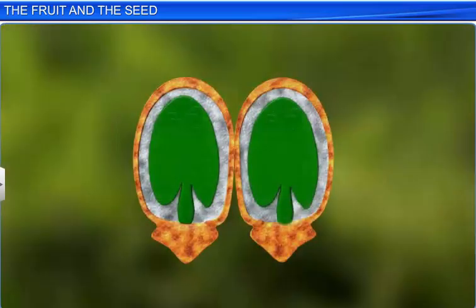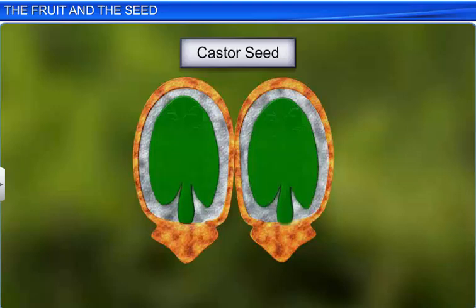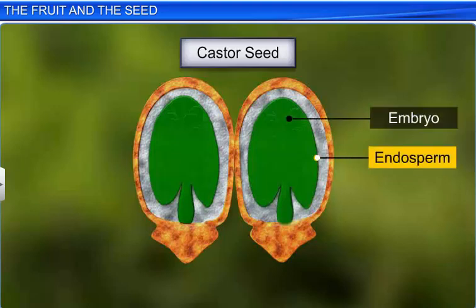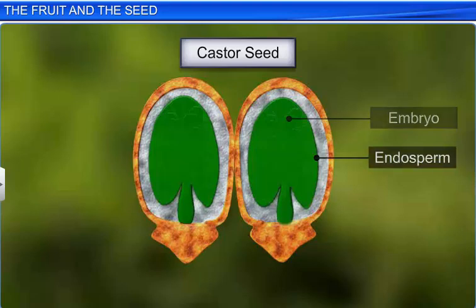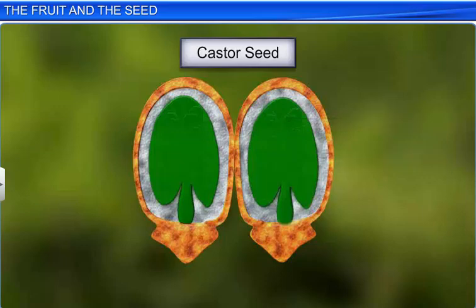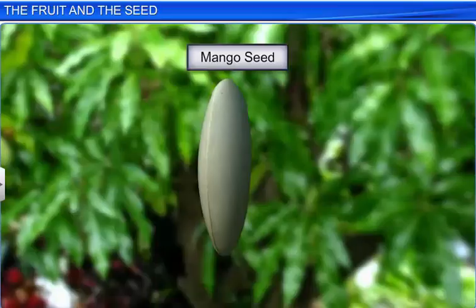In some seeds such as castor, the developing embryo is surrounded by a nutritive tissue called the endosperm, which stores food and helps the embryo grow. Seeds with endosperm are called endospermic. Whereas in seeds like mango, the endosperm is absent — such seeds are called non-endospermic.